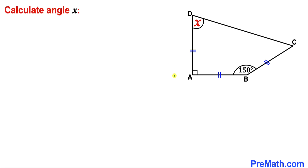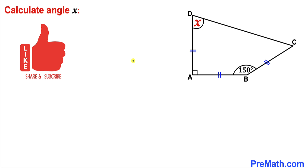Welcome to Pre-Math. In this video we have quadrilateral ABCD such that angle ABC is 150 degrees, and side lengths AB, BC, and AD are equal in length. We are going to calculate angle x.